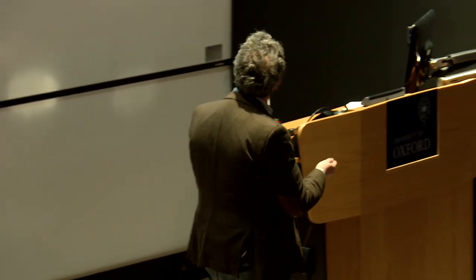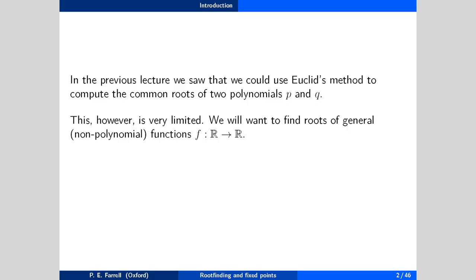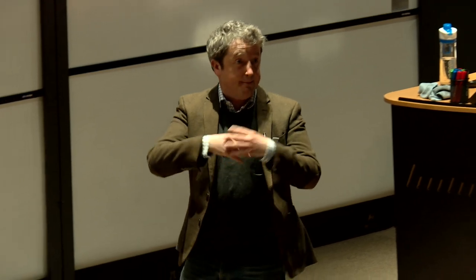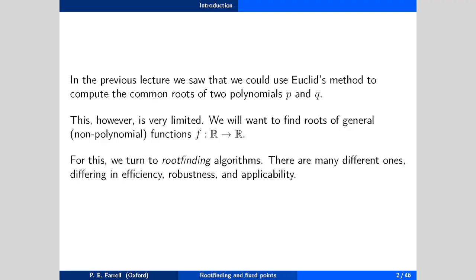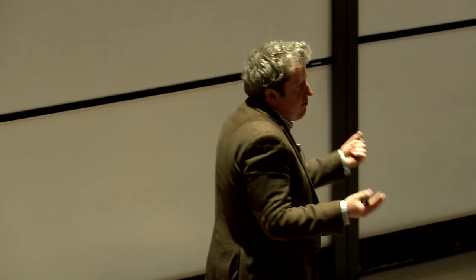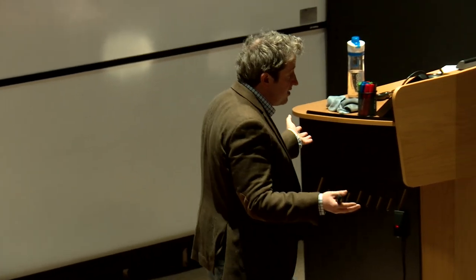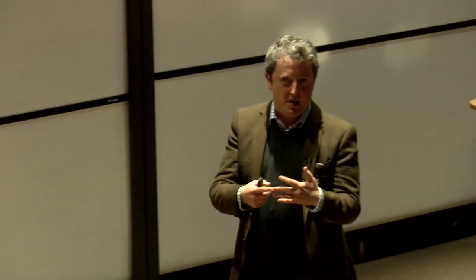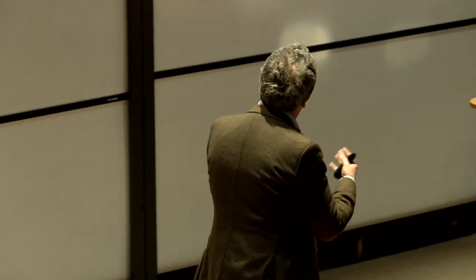We're going to study more general problems in these lectures. We want to find roots of general functions f — not necessarily polynomial — which I'll call the residual. We're going to meet different root-finding algorithms with different approaches, and this should immediately suggest that no one of them is going to be perfect. There are no working alternatives to Euclid's method because it's perfect, but most problems are not like this. We will meet algorithms with different trade-offs between guarantees of convergence, how fast it converges, and applicability.